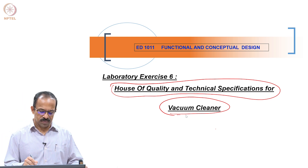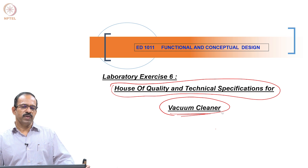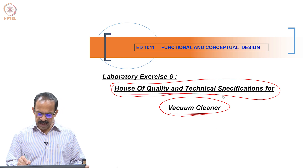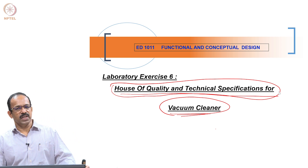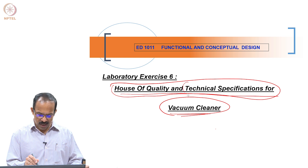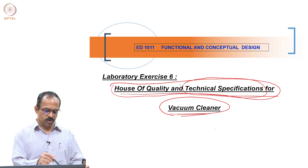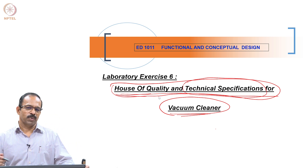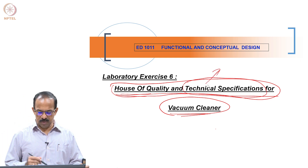If you want to redesign this product and you know the customer needs, how do we use these needs in order to develop the house of quality and technical specification? Technical specification is basically to convert the subjective needs of the customer to an objective value, and then use this information in the house of quality to compare existing products with the product you want to design, and see what should be the target values for the technical specification.